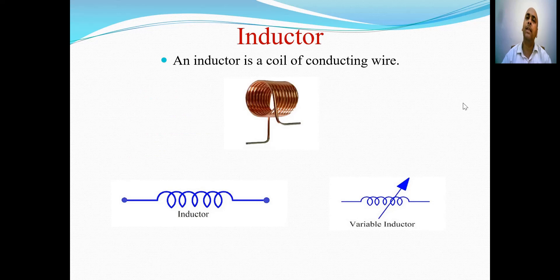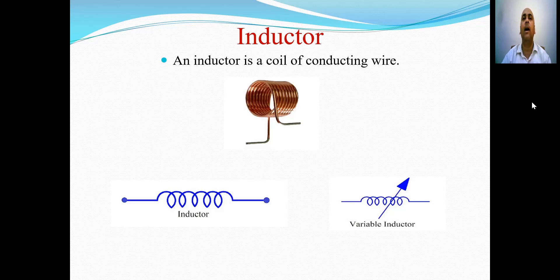First in the series is inductor. An inductor is basically a coil of conducting wire. The parameters of interest of an inductor are the number of turns, the length of the inductor, and the cross-sectional area of the inductor.